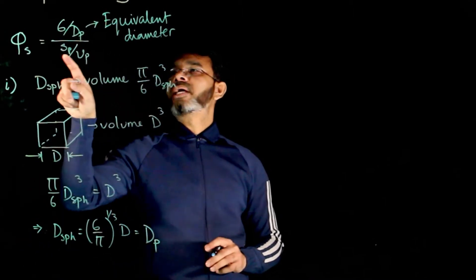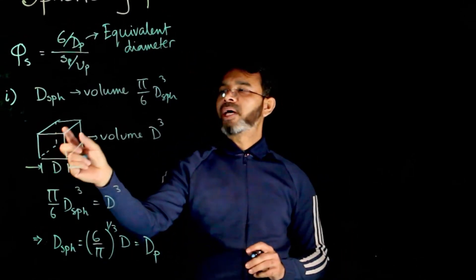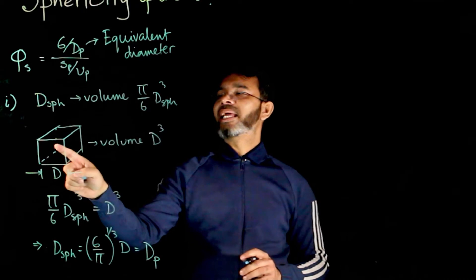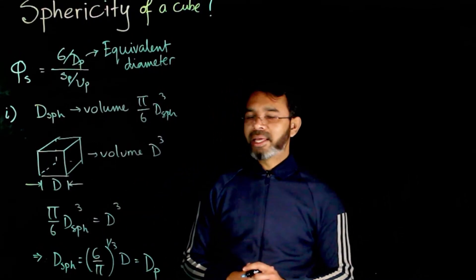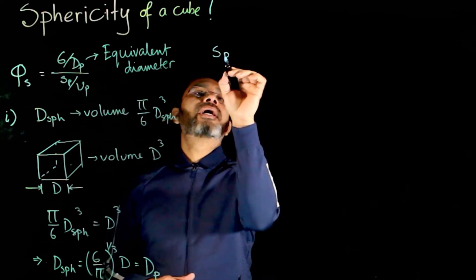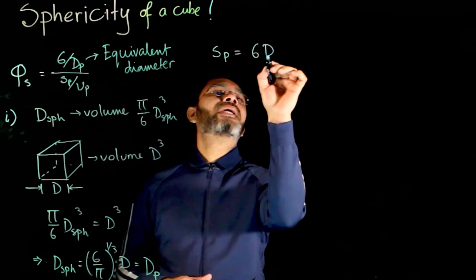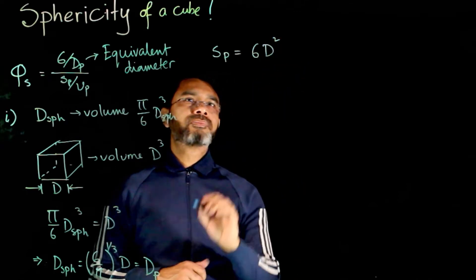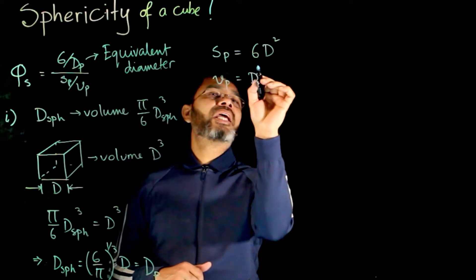What are the other terms here, sp and vp? For a cube, there are 6 surfaces, and each of the surfaces having an area of d squared. So for the cube, sp is 6 d squared, and vp is d cube.